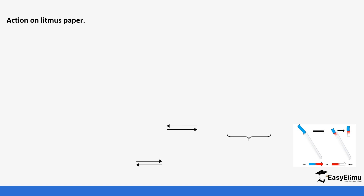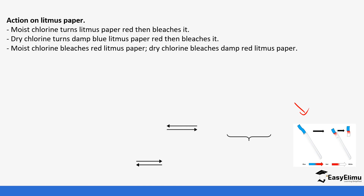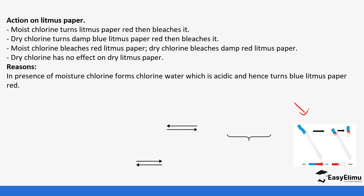If you were to use litmus paper on chlorine, the litmus paper needs to be moist. Moist blue litmus paper will turn red and then get bleached, as you can see on the image. Dry chlorine turns blue litmus paper red and then bleaches it, while red litmus paper will just be bleached. Dry chlorine has no effect on dry litmus paper, but in the presence of moisture, chlorine forms chlorine water.